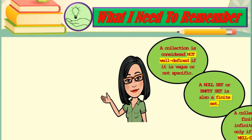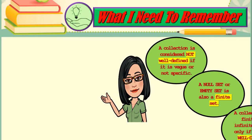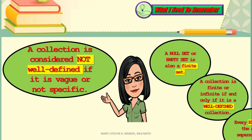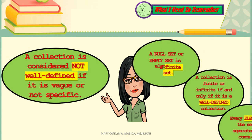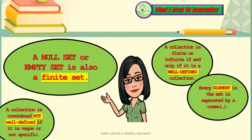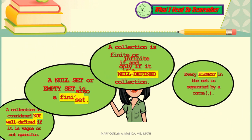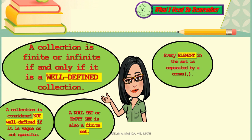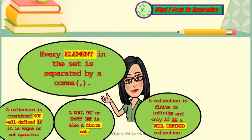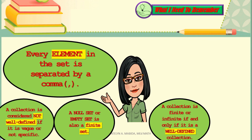Here is what you need to remember: A collection is considered not well-defined if it is vague or not specific. A null set or empty set is also a finite set. A collection is finite or infinite if, and only if, it is a well-defined collection. And lastly, every element in the set is separated by a comma.